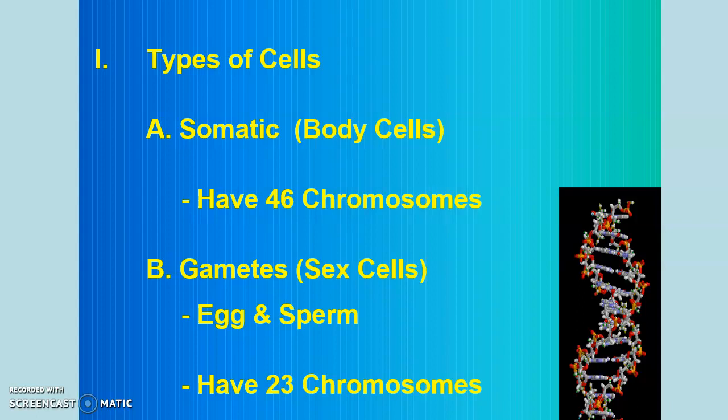In that process, there are really two ways in which cells replicate. One process is called mitosis, and the second one is called meiosis. We're going to start with mitosis, and actually start with the idea of cell division in general. We have a couple of different types of cells: one type is called a somatic cell, and the other type is called a gamete, and they have very different jobs.